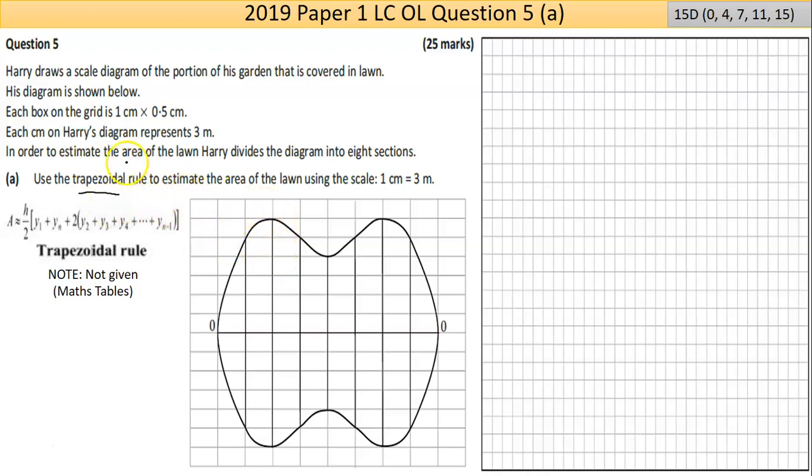We were told in order to estimate the area of the lawn, Harry divides it into eight sections. Each one of those centimeters on the box is three meters, even though it's one centimeter on the graph, that's three meters in reality of what the garden actually looks like. Part A says use the trapezoidal rule to estimate the area of the lawn using that scale of one centimeter equals three meters.